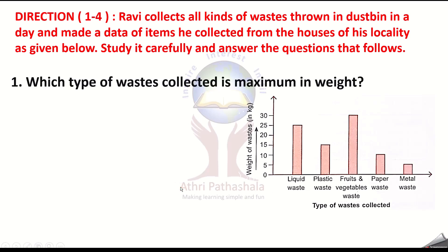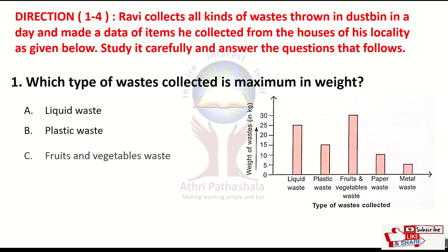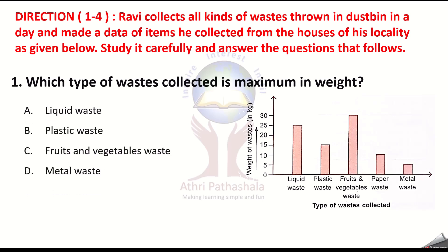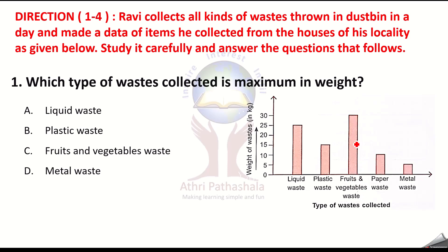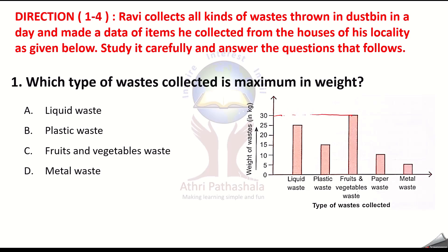First question: which type of waste collected is maximum in weight? In this bar graph, whichever bar is highest represents the maximum weight. The fruits and vegetable waste bar is the highest at 30 kg. Therefore, fruits and vegetable waste is the maximum waste collected. Option C is the correct answer.